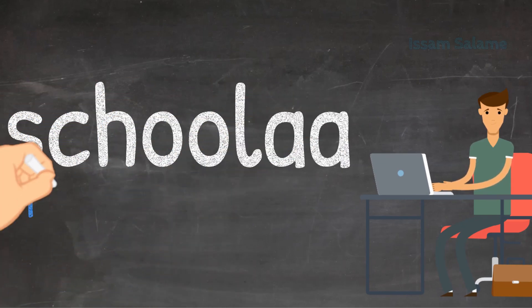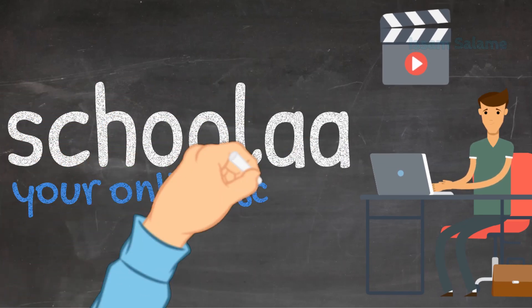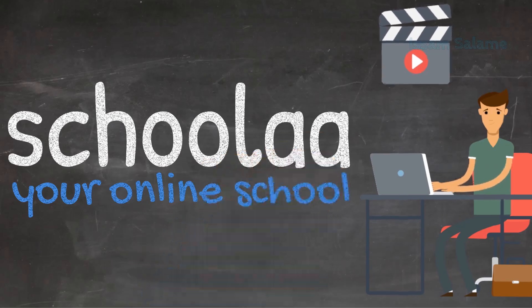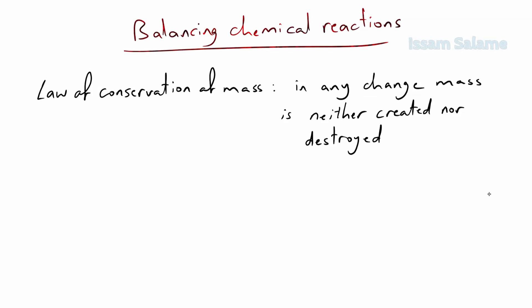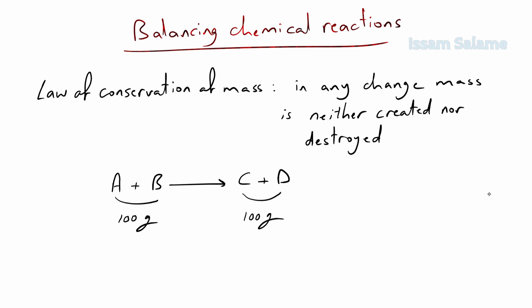In other words, atoms cannot be created or destroyed during any change. Imagine that we have a chemical reaction between A and B to produce C and D. If we start with 100 grams of the reactants A and B, we should end up with 100 grams of the products C and D.